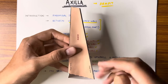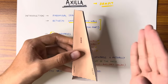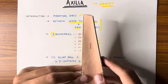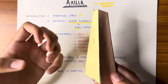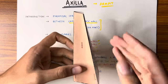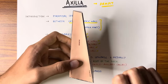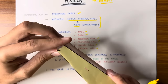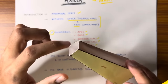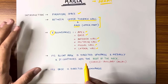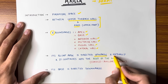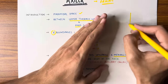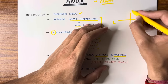So total four walls are important: anterior wall, posterior wall, medial wall, and lateral wall. The medial wall is directed towards the upper thoracic wall, and the lateral wall is directed towards the arm. This is the anterior wall in front and the posterior wall in back — these are the four walls besides our axilla, plus one apex and one base. The apex is directed upwards and medially.